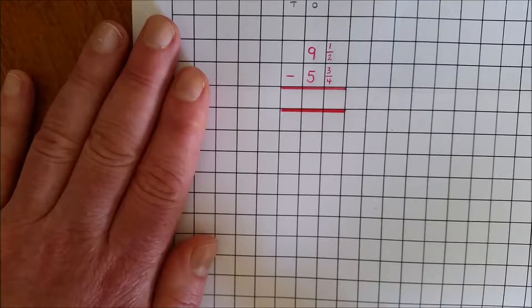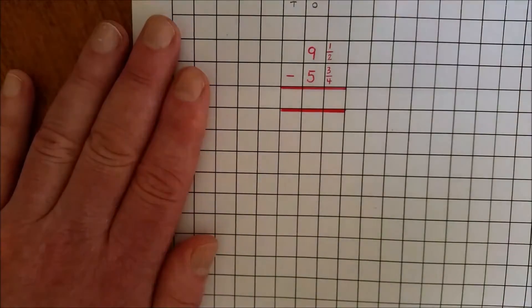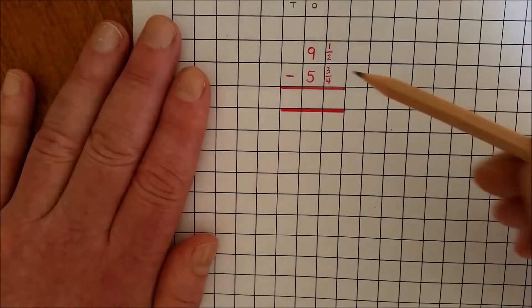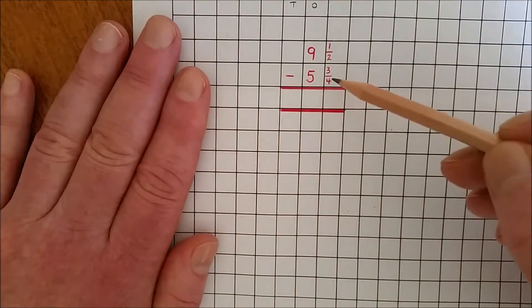I am going to do 9 and 1 half subtract 5 and 3 quarters using the decomposition method. Subtract the fraction. 1 half, can you take away 3 quarters?